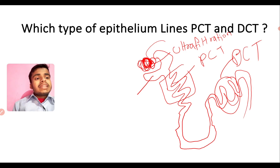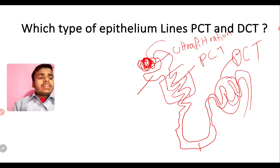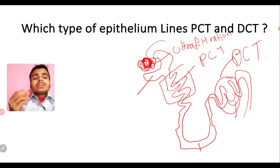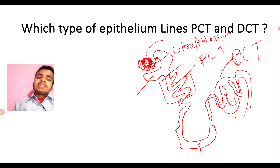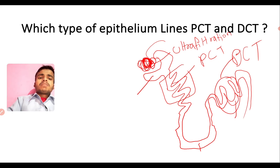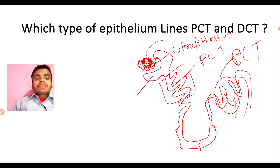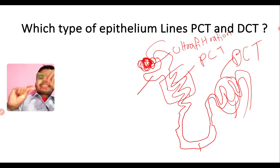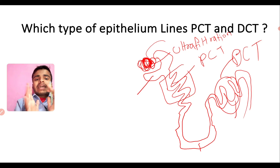In the PCT, the job is absorption. In the loop of Henle and conditionally in the DCT, the job also involves absorption and passing of substances. If you think the PCT job of absorption means simple squamous epithelium — that would be wrong. The PCT has a specific epithelium suited to its function of heavy absorption and reabsorption.